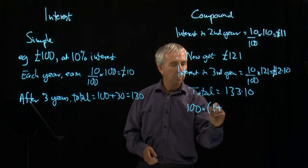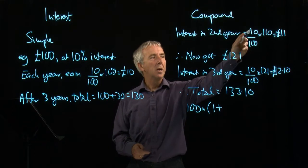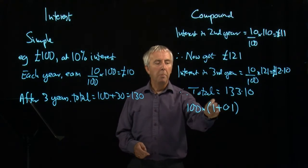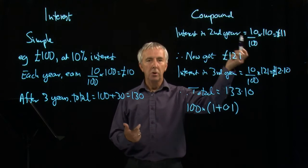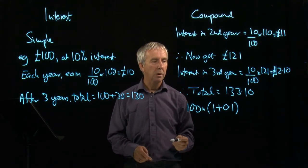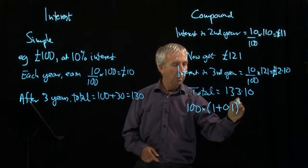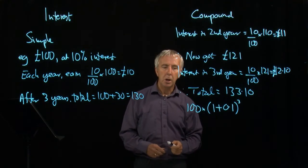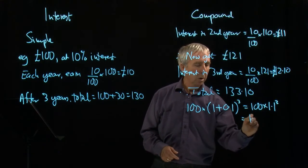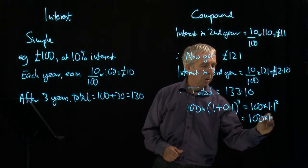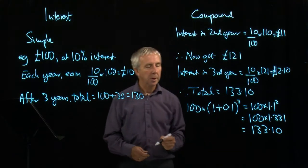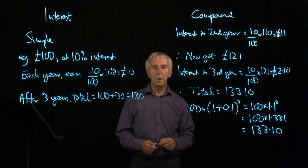We multiply by 1 plus the interest rate, or 10 hundredths is 0.1. That gives us 1.1 times 100, takes you to 110. And then we do the same the next year. Each year we multiply by 1 plus the interest rate. So after three years, I will simply have to multiply by that bracket cubed. So that's 100 times 1.1 cubed, which comes to 100 times 1.331, which is 133 pounds 10p. So that's the quicker way of doing compound interest.